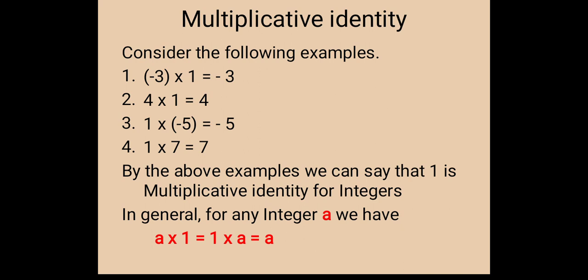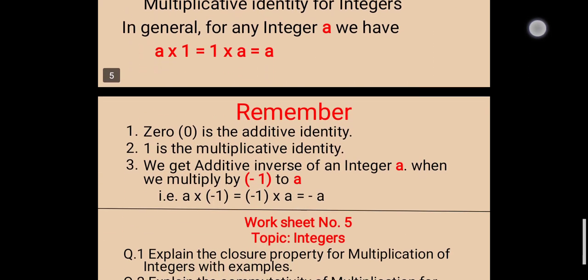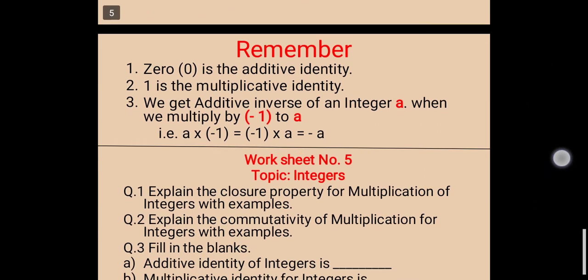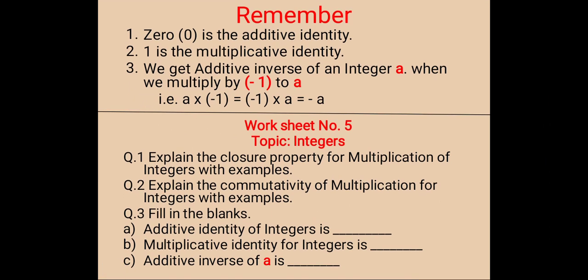Now, remember these summary points. First: 0 is the additive identity. Second: 1 is the multiplicative identity. Third: we get the additive inverse of an integer a when we multiply minus 1 to a. That is, a into minus 1 is equal to minus 1 into a is equal to minus a — that is, the additive inverse of a.